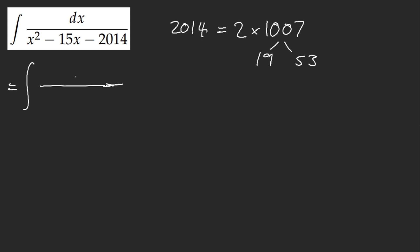This integral, unfortunately, favors math olympiads. So if you're a math olympiad, congratulations! You can solve this integral in seconds if you know your factors of 2014. Apparently you can factor this, and it becomes (x minus 53) times (x plus 38). And you just have to do partial fractions.